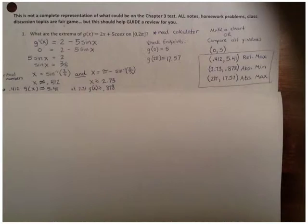Don't forget when we're looking on a closed interval, we want to check what's happening at the endpoints. So when you're checking what's happening at the endpoints, just substitute those values into the original function and see where our y values stand. In doing so, I get g(0) equals 5 and g(2π) is about 17.57.